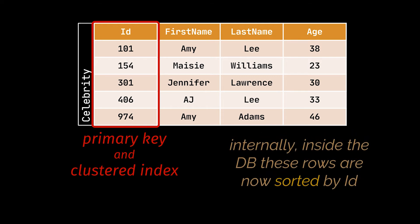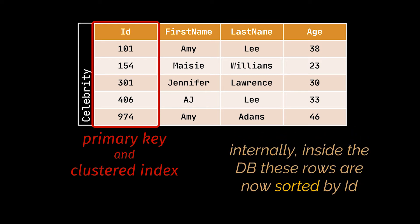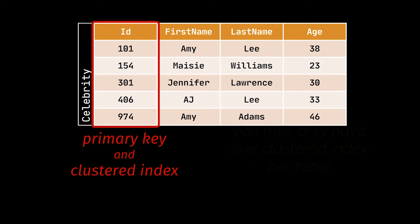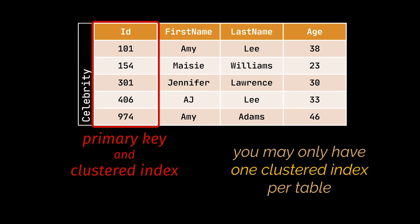The first index created by default upon creation of a primary key is the primary index, also referred to as the clustered index. What this means is that the data inside a table are by default ordered based on the column set as the primary key, and this will allow the database management system to select rows based on this column without the need for a full table scan. In a table, you may only have one clustered index, because a table can internally be essentially sorted by one column. So if you want to change the clustered index to be a different column than the primary key one, you can do that.